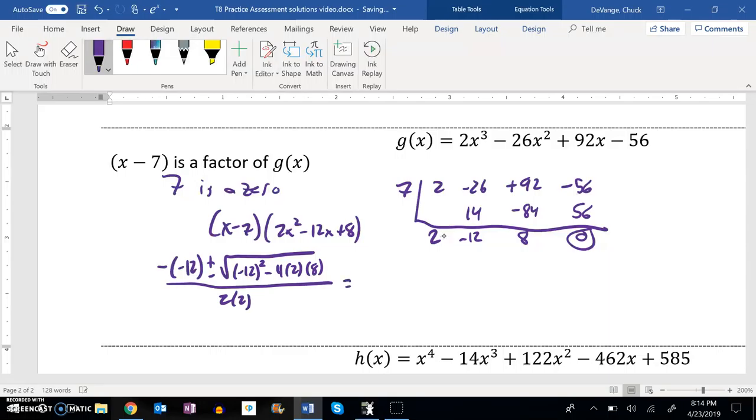Great. Negative negative 12 is positive 12. 2 times 2 is 4. Negative 12 squared is positive 144. And then 4 times 2 times 8 is 64.